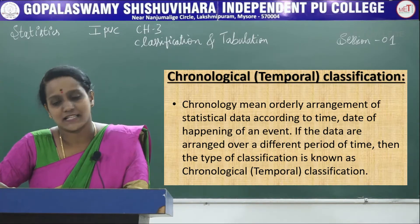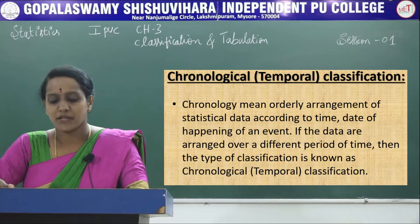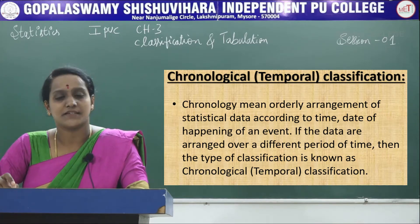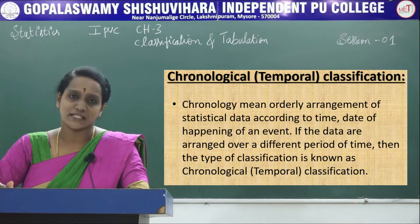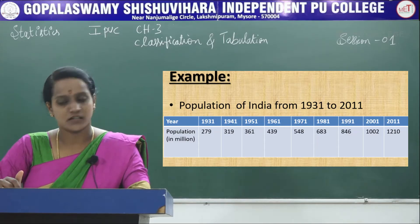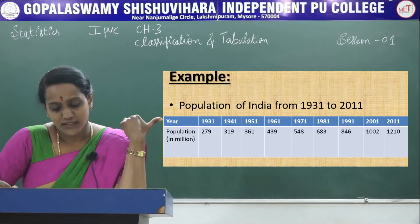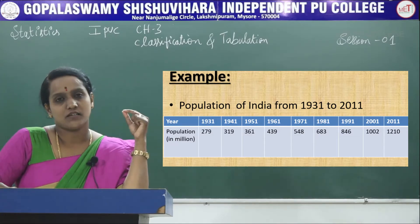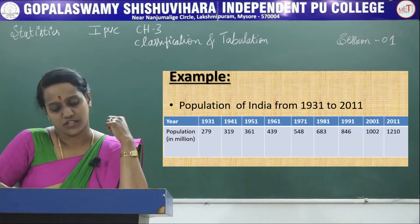The first type is chronological classification. Chronological means orderly arrangement of data according to time or the date of happening of an event. If the data are arranged over different periods of time, that type of classification is called chronological classification. An example is the population of India from 1931 to 2011, where year is listed in order alongside population in millions — this is the best example of chronological classification.